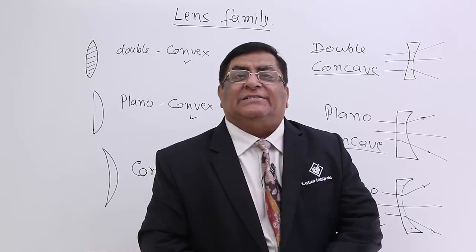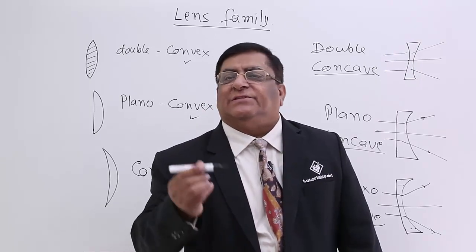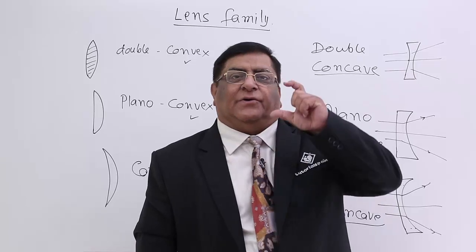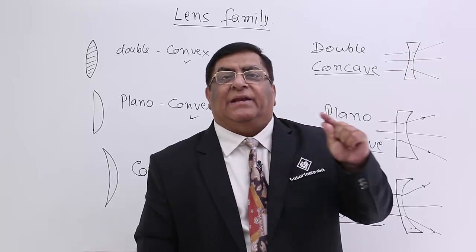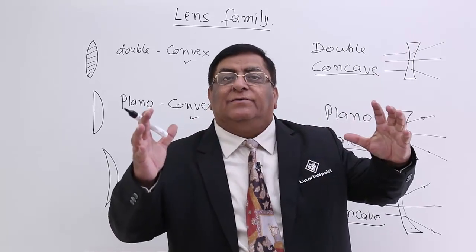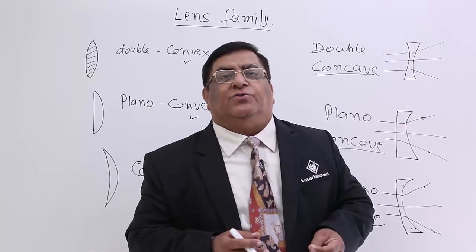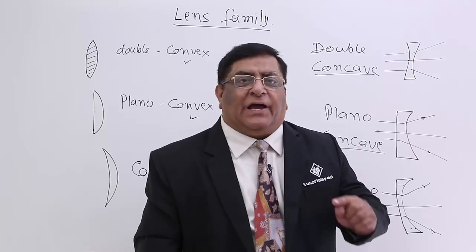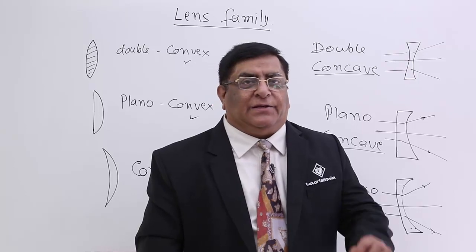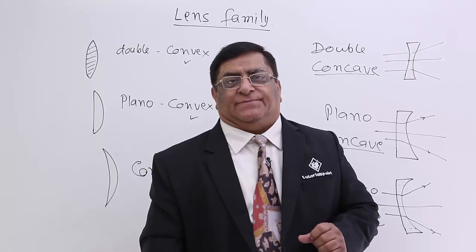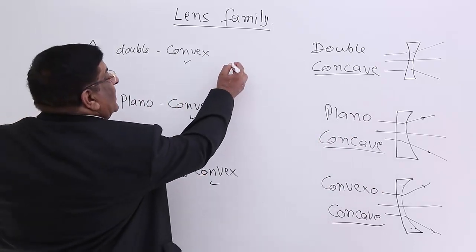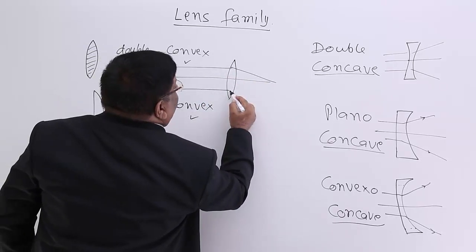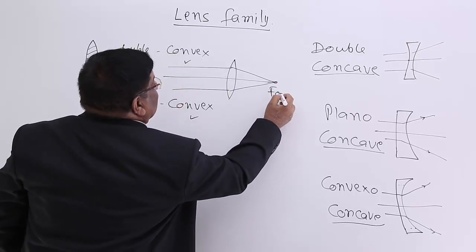A lens has a converging or diverging action — it can bend the direction of light. We need this for correction of our eyes, to see things larger or magnified, and to make telescopes, microscopes, and many other instruments. For that we have different definitions. A very important one is the focus. When parallel rays come to a converging lens, all of them converge at a single point — this point is known as the focus.